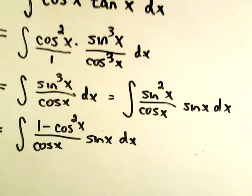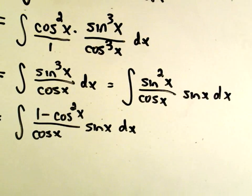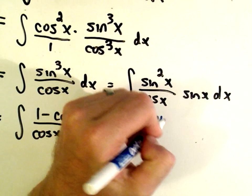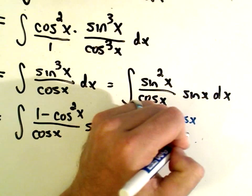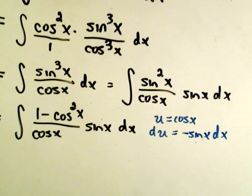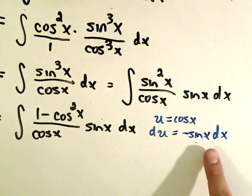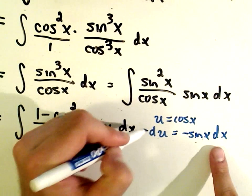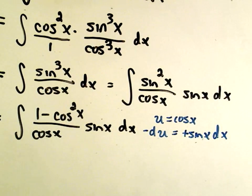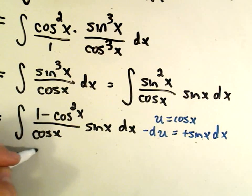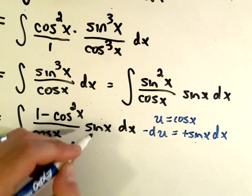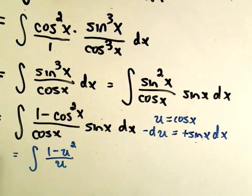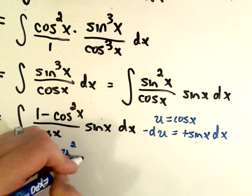And now at this point, we can simply do a nice little u substitution. We'll let u equal cos x. Du will be -sin x dx. We only want a positive sin x dx, so I'm going to multiply both sides by -1. And then if I use my u substitution, I'll get (1 - u²)/u. My sin x dx is equivalent to my negative, which I'll pull up front, du.